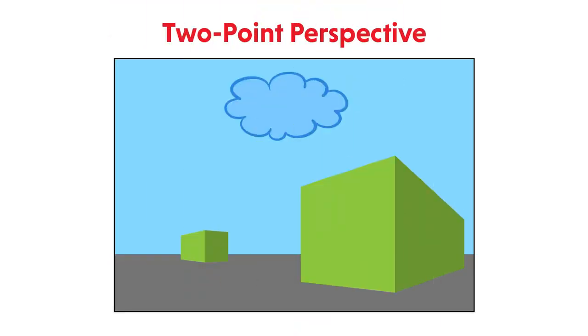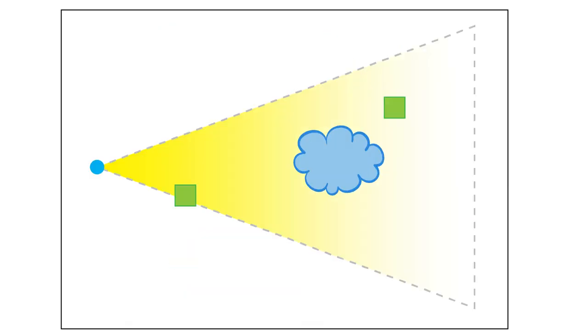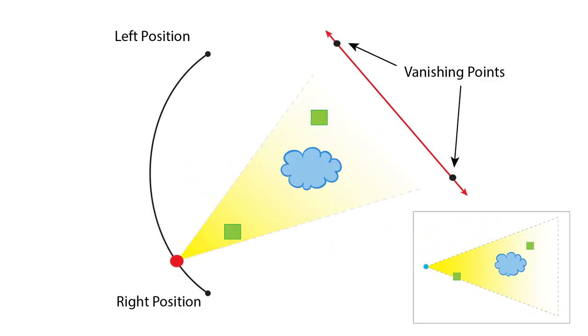Alright now let's learn about two point perspective. Here's the top view again similar to one point perspective but with a key difference. First instead of looking directly at the face of the objects our viewer is standing off to the right facing the corner of the objects.